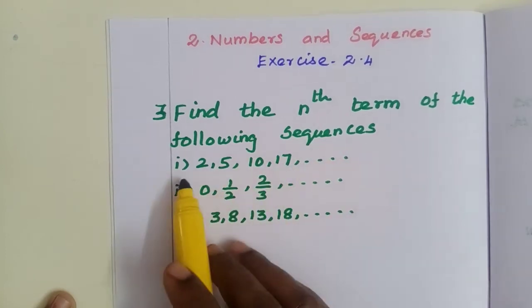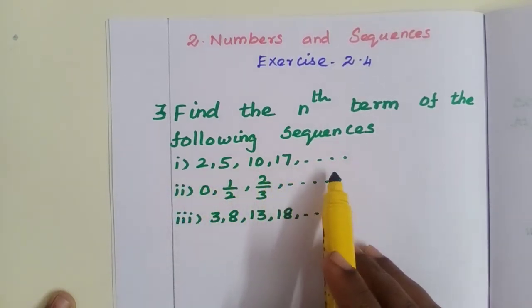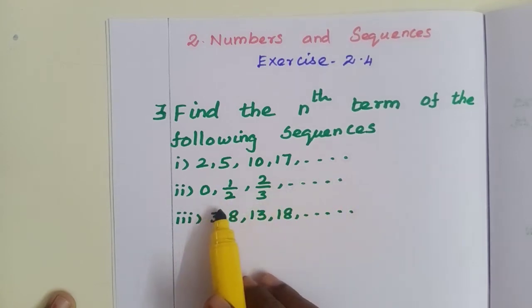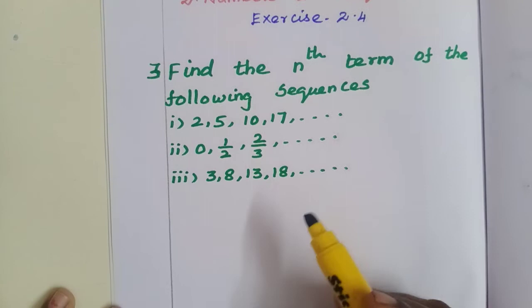First one: 2, 5, 10, 17, etc. Second one: 0, 1/2, 2/3, etc. Third one: 3, 8, 13, 18, etc.